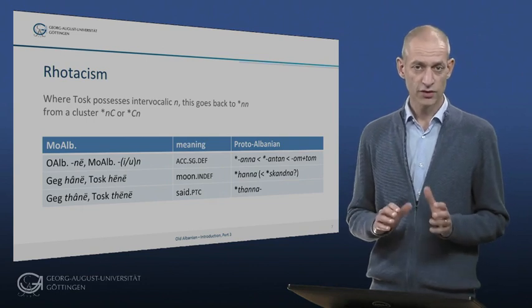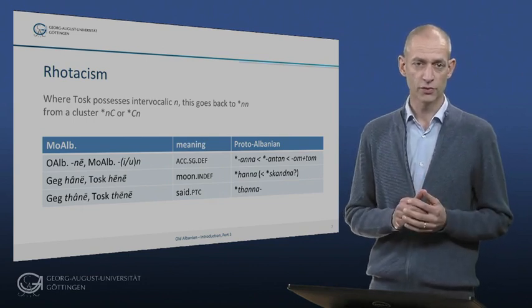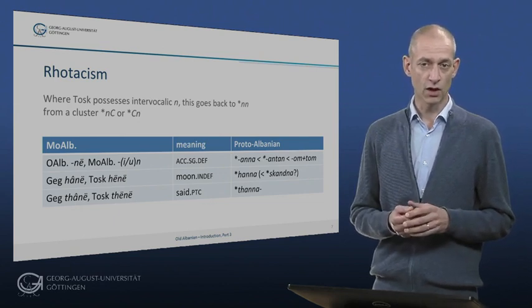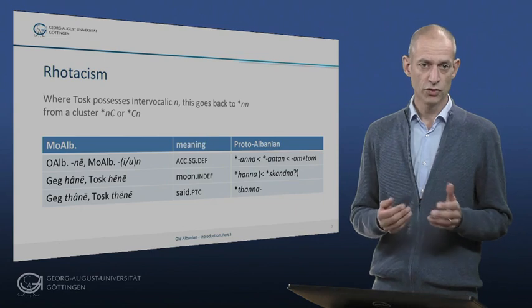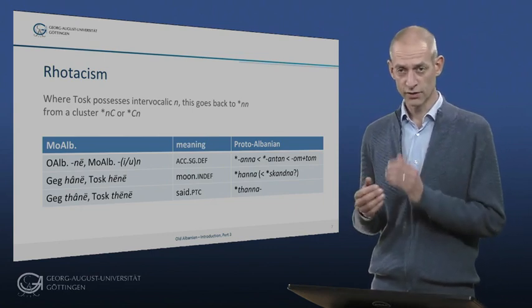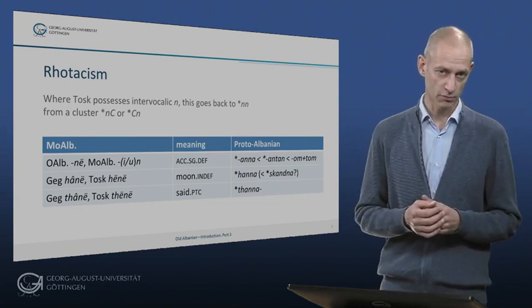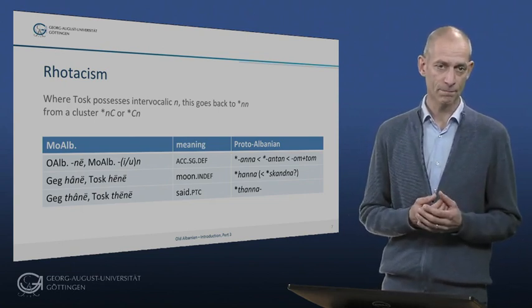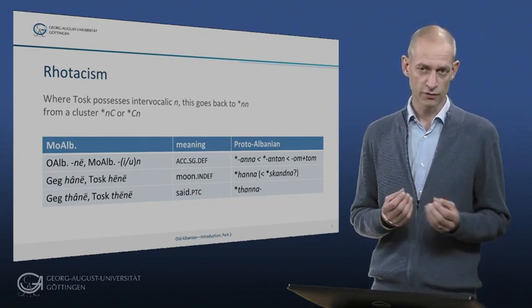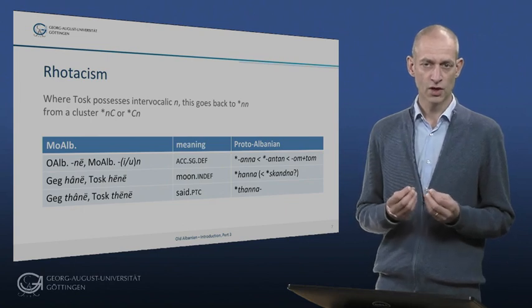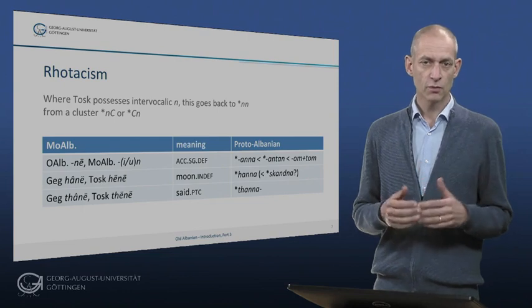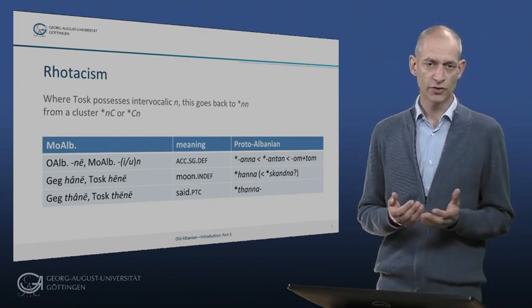Still, TOSC dialects also contain words with intervocalic N. Such forms must be explained from the relative chronology of developments. A new single intervocalic N arose in TOSC after the earlier intervocalic N had become R by the sound law we saw before. As far as we can see, such cases of a new intervocalic N always go back to consonant groups of the type consonant plus N, or N plus consonant, which were thus immune to the rhoticism sound law.